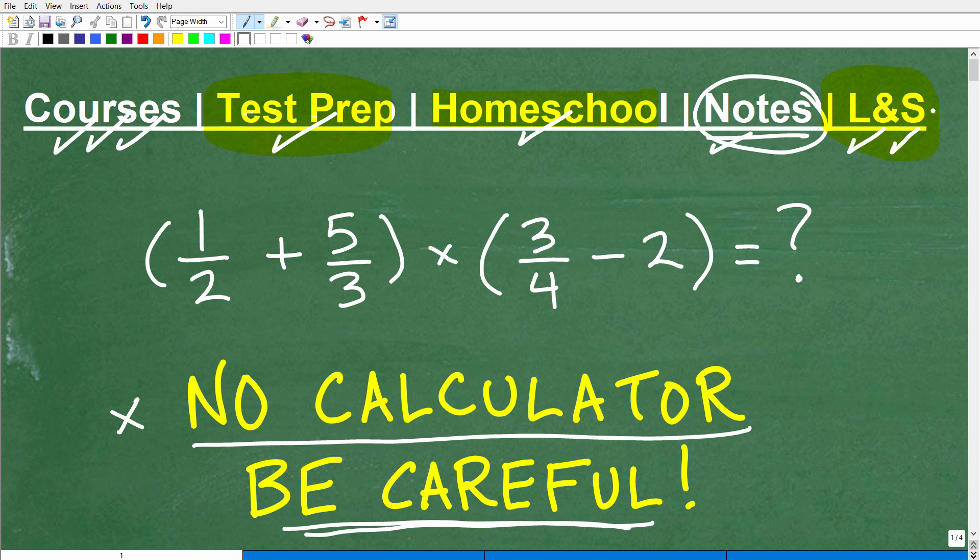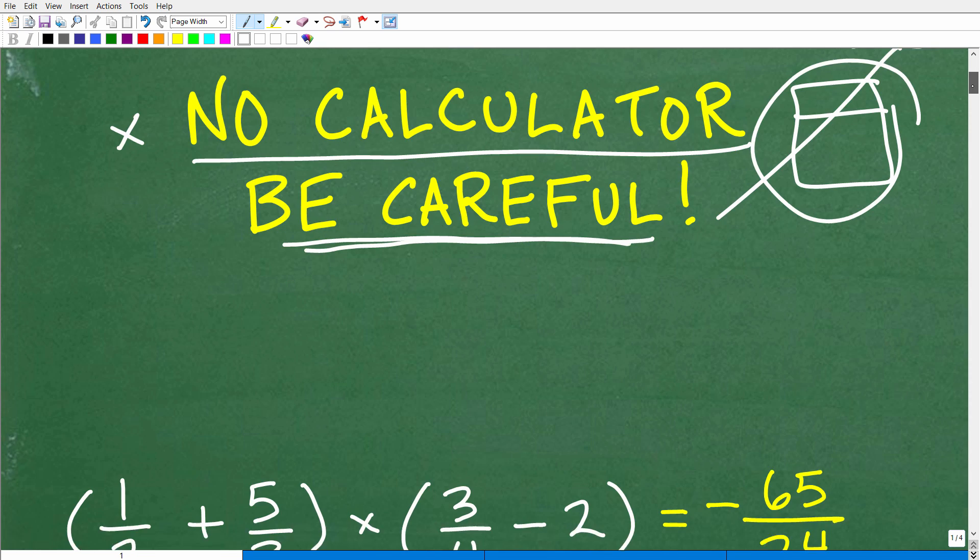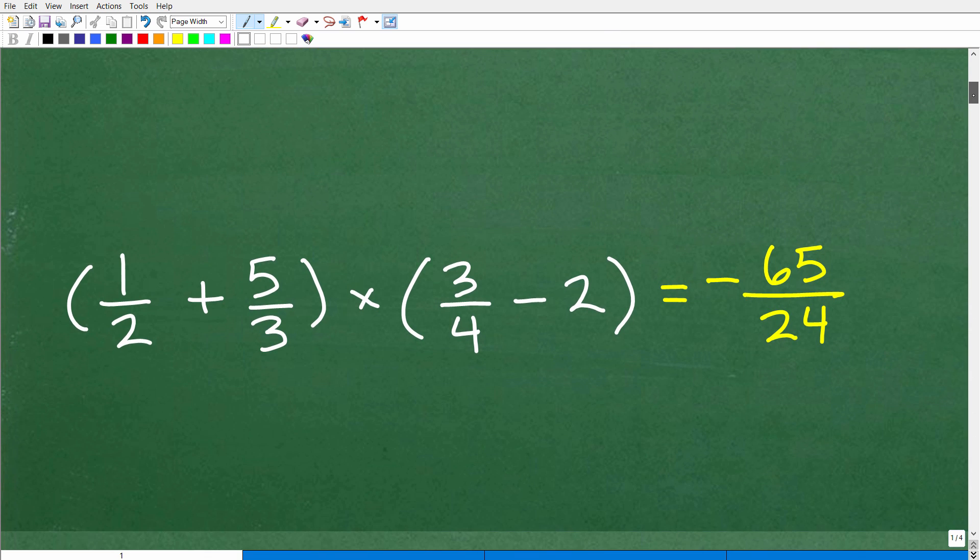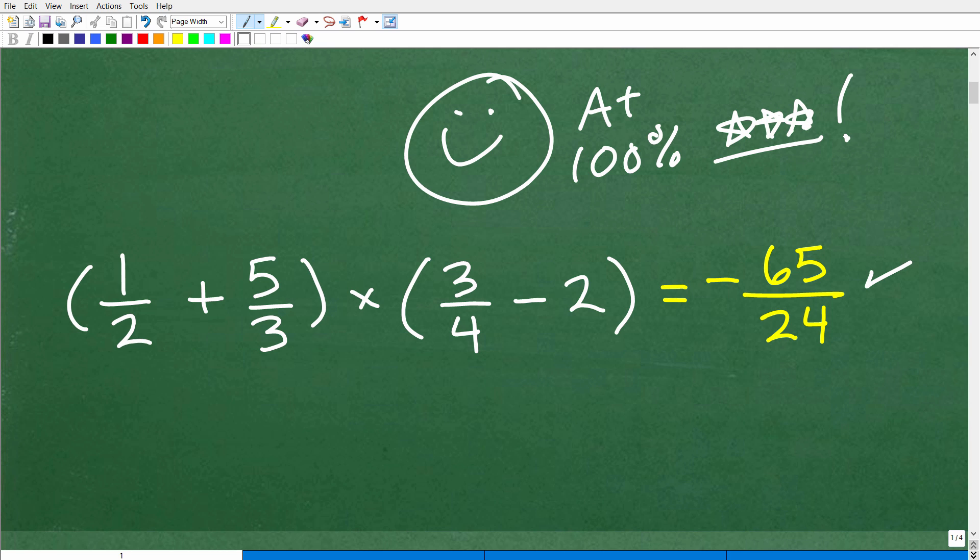Let's go ahead and get into this problem. We don't want to use our calculator. Put this thing away and go get your old school calculator, which is a piece of paper and a pencil. Let's take a look at the answer now. The answer is negative 65 over 24. If you got that right, I must reward you with a nice happy face and A plus.